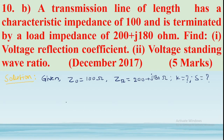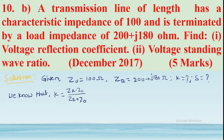First, we determine the reflection coefficient K. We know that the reflection coefficient K is equal to (ZR minus Z0) divided by (ZR plus Z0). Substituting ZR and Z0 values: numerator is (200 + j180) minus 100, which gives 100 plus j180.